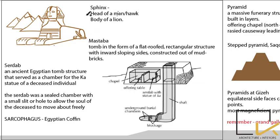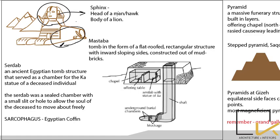Sphinx is a structure you might have seen all over Egypt. It has the head of a man or hawk and the body of a lion. Its basic purpose was guarding the temples.